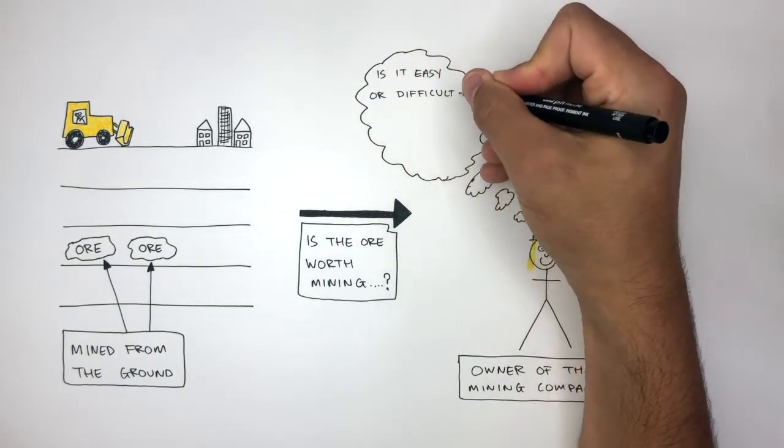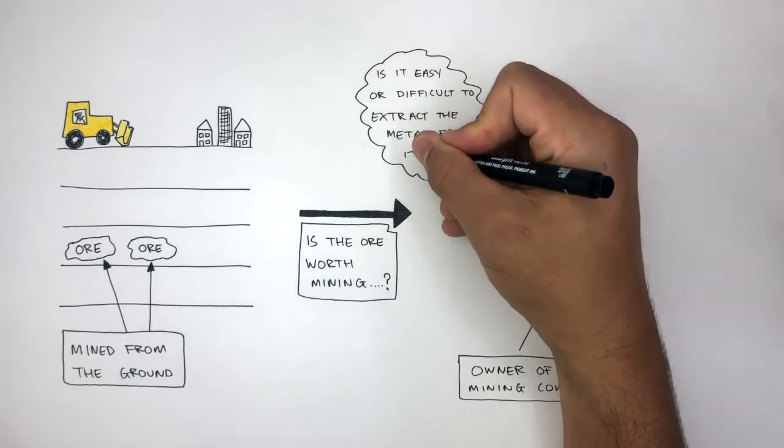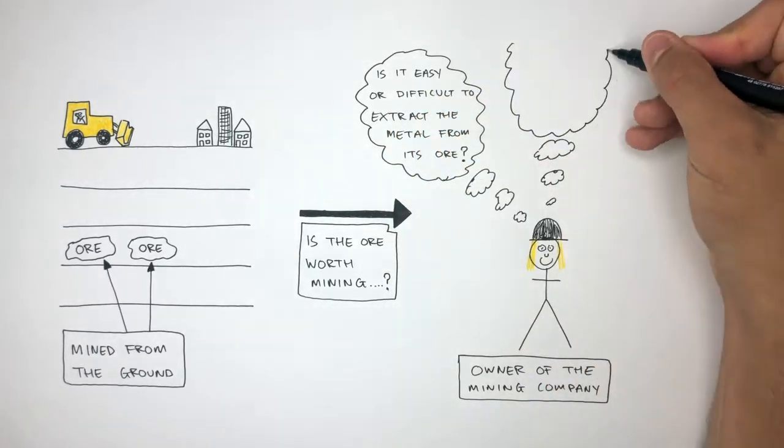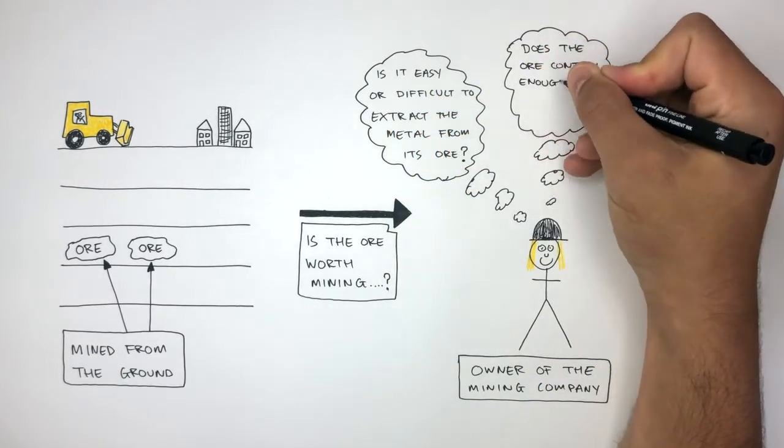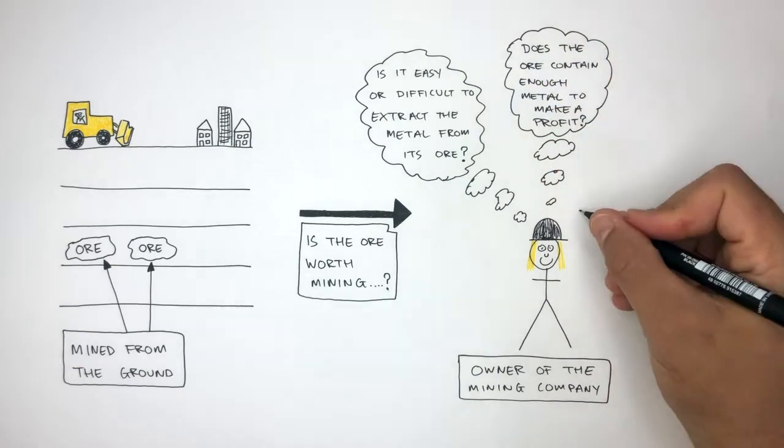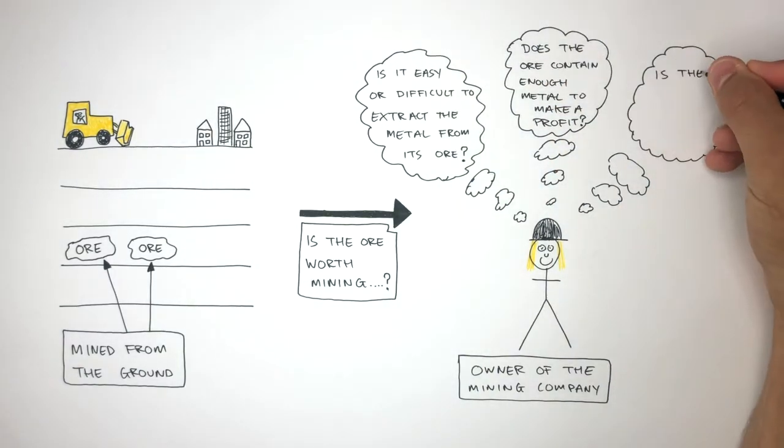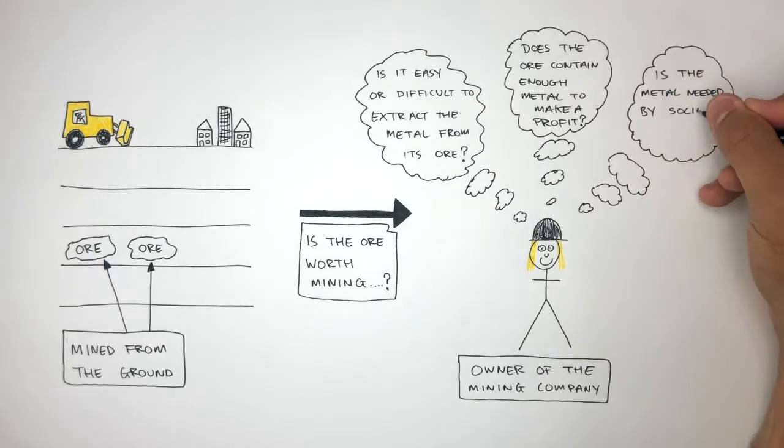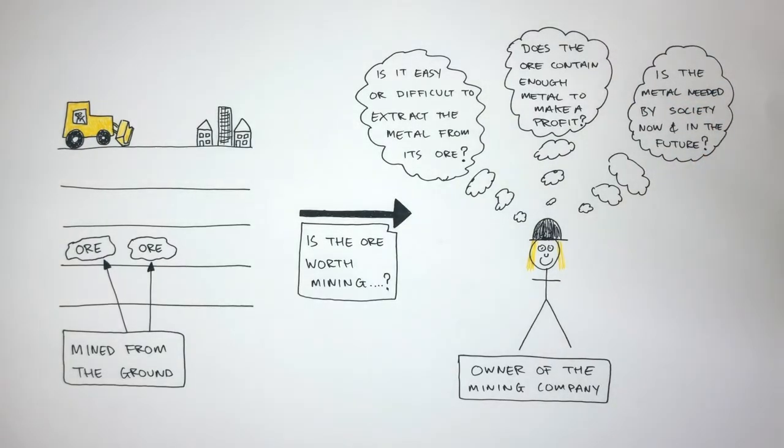Is it easy or difficult to extract the metal from its ore? Does the ore contain enough metal to make a profit? And is the metal needed by society now and in the future? So if the metal is easy to extract, and there's enough of it in the ore to make a profit, and the metal is needed by society now and in the future, then the easy decision is definitely to mine that ore.